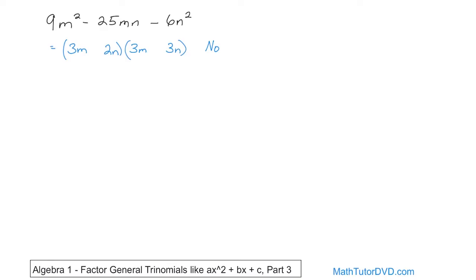So what I do as a shortcut is I come down here and I don't even write the parentheses. I put a 3 here and a 3 here. And previously I tried 2 and 3, so I'm going to flip it around and just put a 3 here and a 2 here. What I'm checking for is the inside plus the outside terms. This will give me 9. 3 times 3 is 9. This will give me 6. 9 and 6 — there's no way that's going to give me 25.